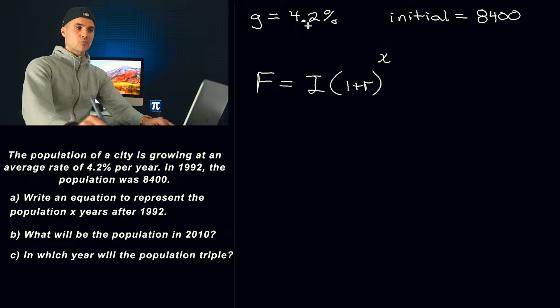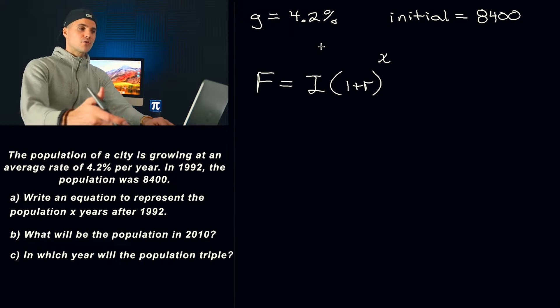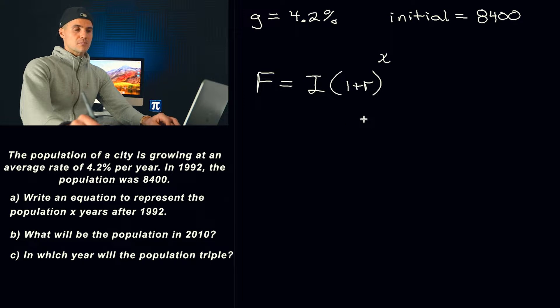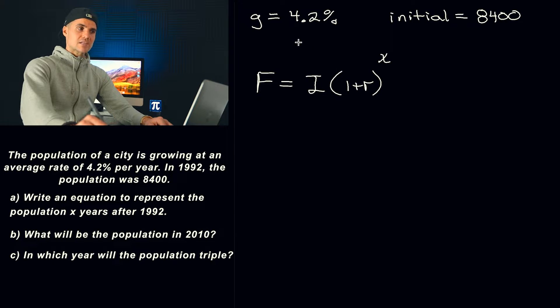But sometimes you might get questions where something is decaying by a certain percentage. So if it was decaying by like 30%, then the r would be negative 0.3. And we've done examples like that in the lecture videos. So sometimes you'll maybe get like a car is depreciating at a certain percentage every year. Then that r value here would be negative. But if something is growing, like in this case, the r value is going to be positive. And you always got to remember that this r value here, that has to be in decimals, not in percentages.